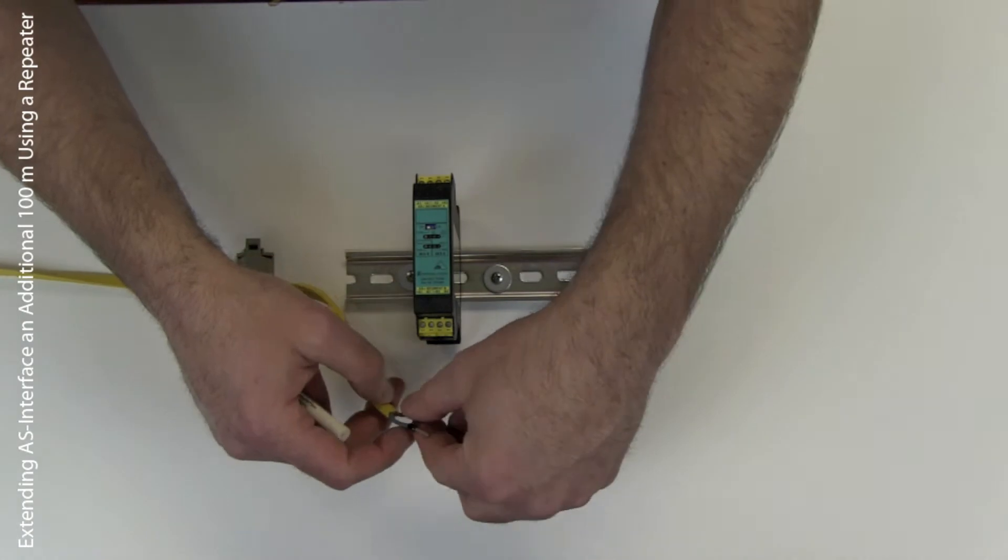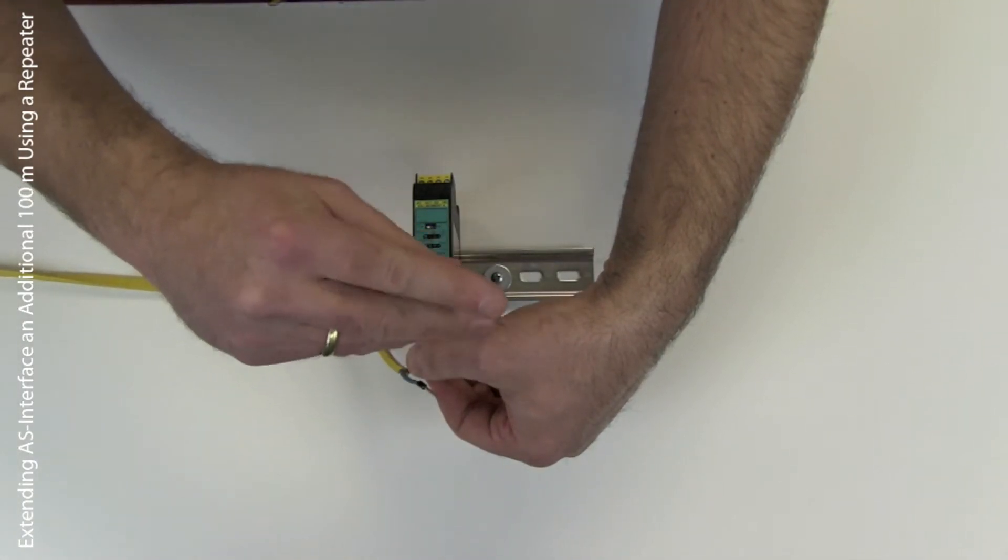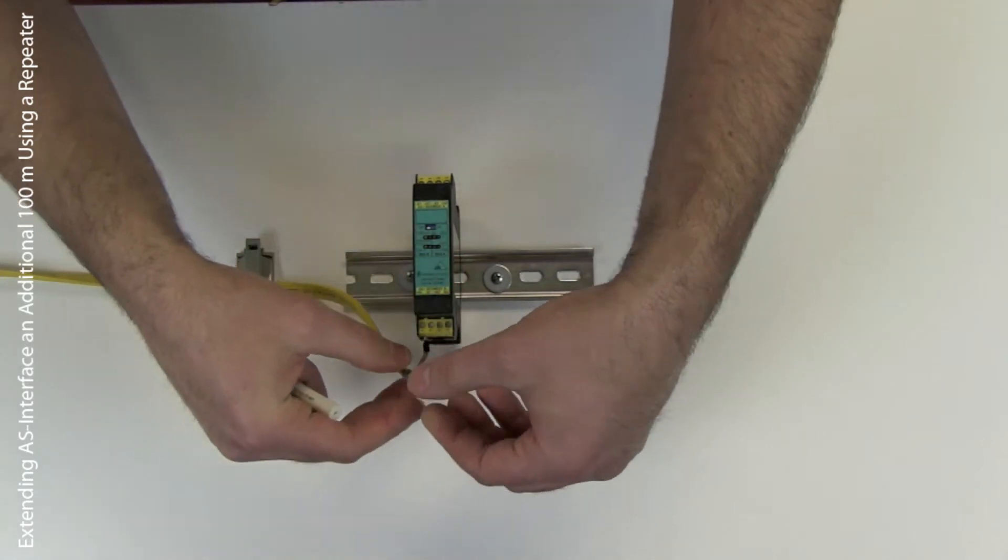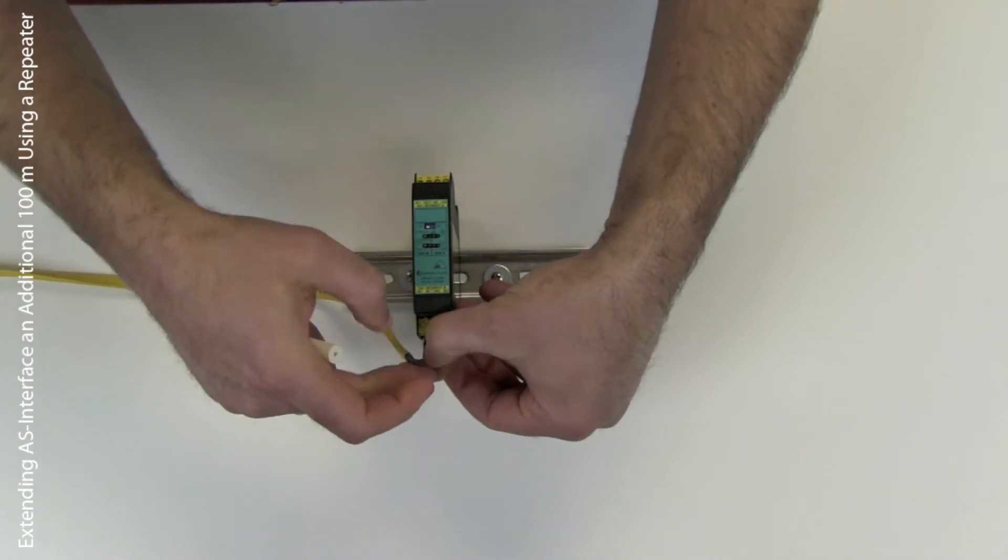In this example here, you can see the ASI yellow cable coming off the left-hand side of your screen. That's the first 100 meter segment. All the way back, 100 meters away, is the power supply and the AS interface gateway or scanner.